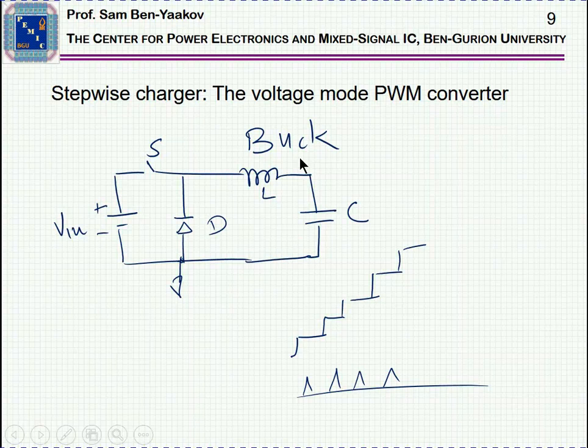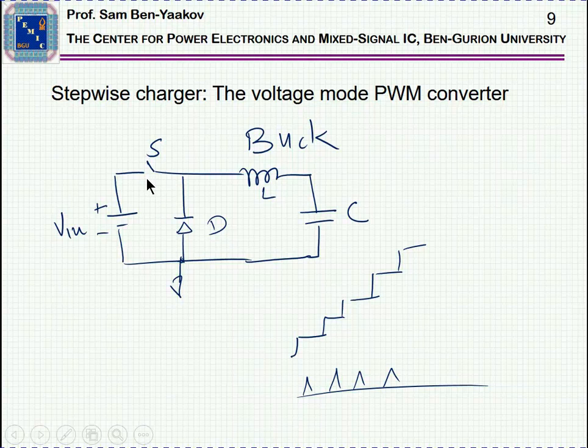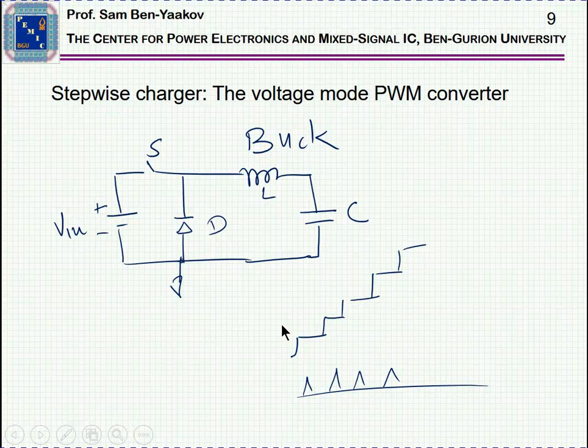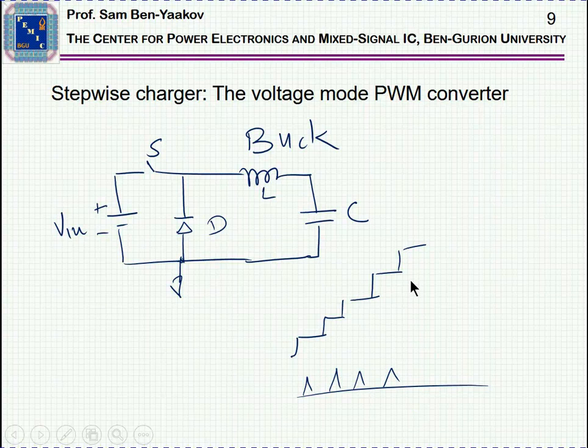Another way to do it would be to use a PWM converter. Here, I'm showing a buck converter, which is programmed in such a way that the duty cycle is sort of jumping from one value to another, thereby generating sort of a step voltage at the output, which is then very similar to what we had before, except you sort of generate these voltages on the fly. Therefore, the current will be lower, and consequently, the losses will be lower.